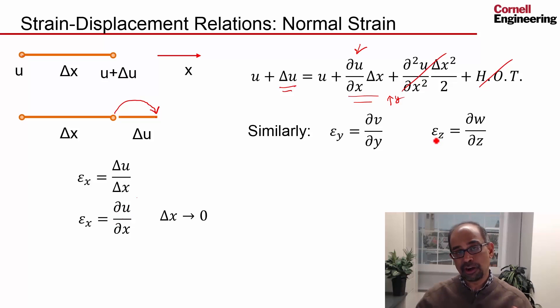Similarly for the normal strain in the z direction, that's the displacement in the z direction, so you get εᵧ = ∂w/∂z.